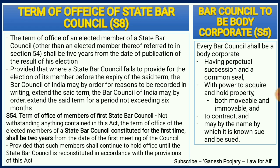Section 5 discusses about bar council as a body corporate. A bar council is a body corporate because it has perpetual succession, it has a common seal, it can acquire and hold any kind of movable and immovable property, it can enter into contracts, and it can sue and be sued. That is why it is considered a body corporate as per section 5.